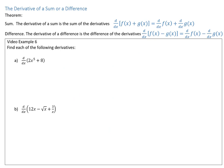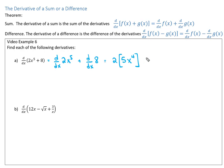We have a new rule about derivatives of sums or differences. If you have the derivative of an expression with multiple parts, you can take the derivative of each term and then add or subtract those terms together as applicable. For example, d/dx of 2x^5 plus 8: take the derivative of each term individually. d/dx of 2x^5 is 2 times 5x^4, and d/dx of 8 is 0. Simplified, that gives 10x^4.